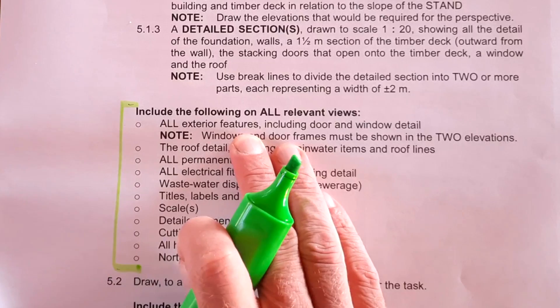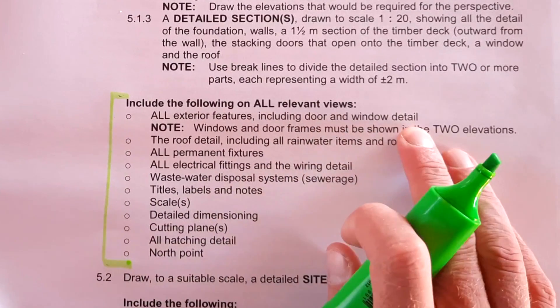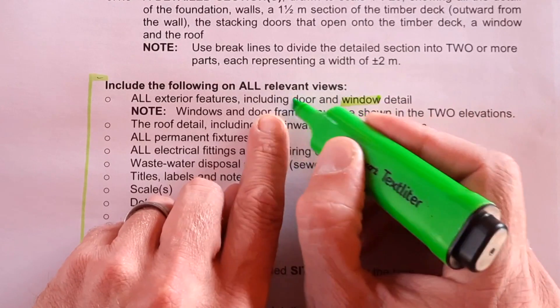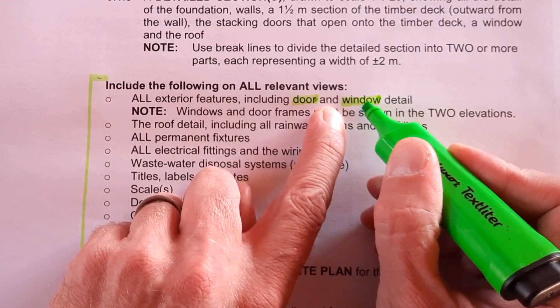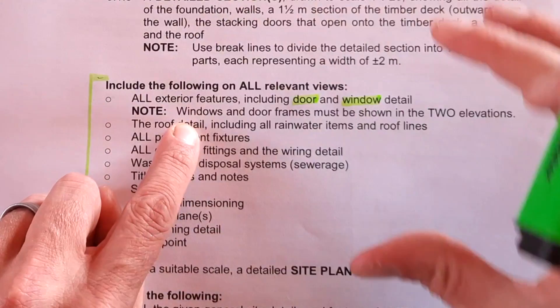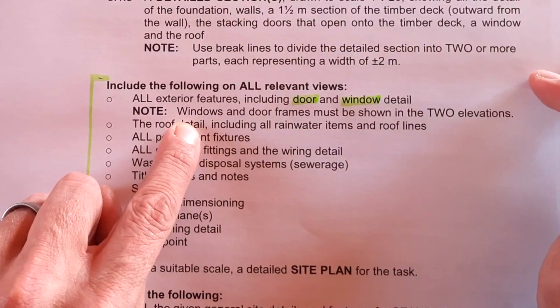All exterior features, including door and window detail. In other words, the actual window design, the door design that includes your windowsill. Exterior features, that's going to be on our floor plan where we indicate our drainage.